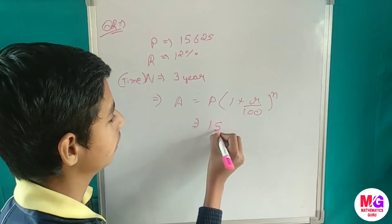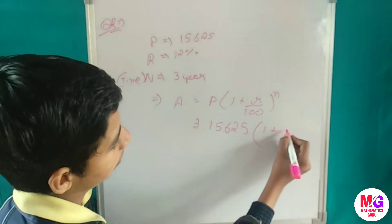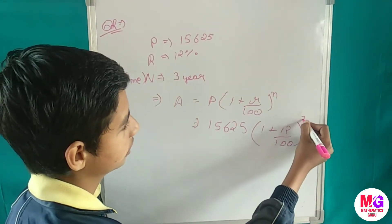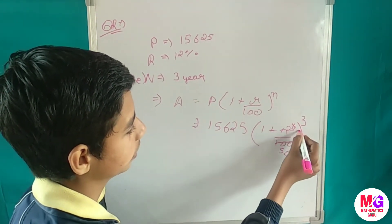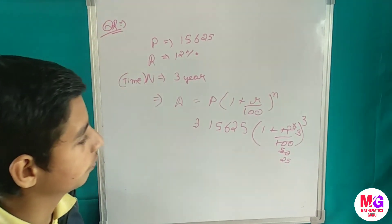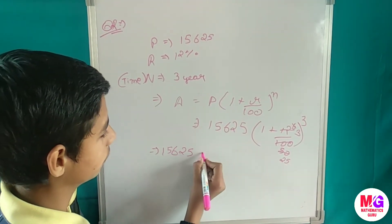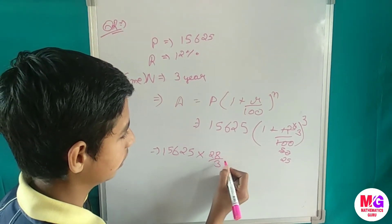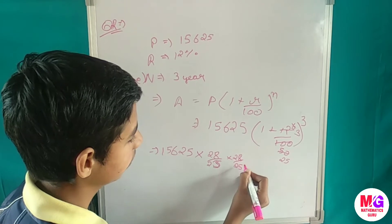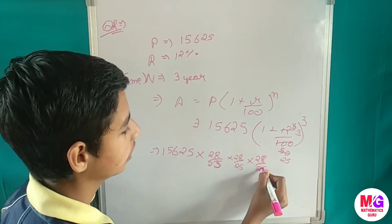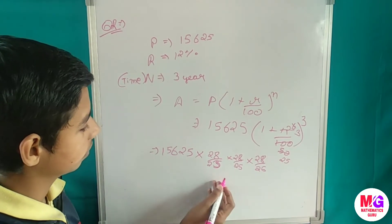Substituting: P is 15625, rate is 12% upon 100, power is 3. After simplifying, 12 upon 100 reduces — cancelling gives us 3 upon 25. So 1 plus 3 upon 25 gives 28 upon 25. Taking the LCM we get 15625 multiplied by 28 upon 25, three times over, because the power is 3.